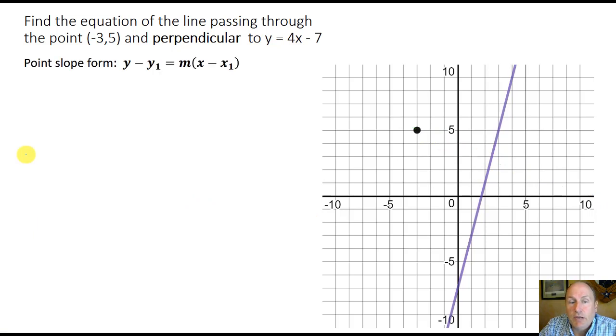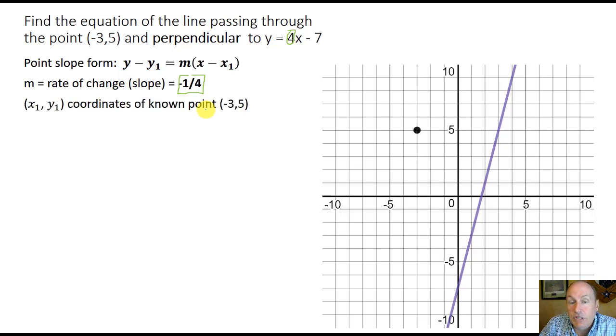We're still going to start off with point slope form, y minus y1 equals the slope, our rate of change times x minus x1. Although in this situation now, since the original line slope is 4, we need the negative reciprocal of it. So we are going to multiply it by negative 1 and then find its reciprocal. So 4 times negative 1 is negative 4. Flip that or find its reciprocal, you get negative 1 over 4. So the slope of our perpendicular line is going to be negative 1 fourth. We still have the same point, negative 3 comma 5.